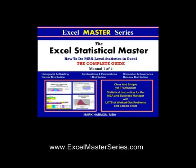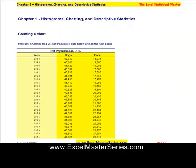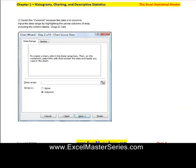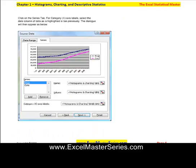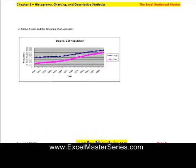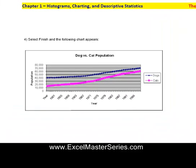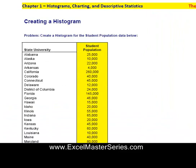Here's the first manual. It covers histograms, combinations, permutations, correlations, covariance, the normal distribution, T-distribution, and the binomial distribution. Here we're going to make a chart out of that data — I walk you through step-by-step with lots of screenshots. There's the chart we will make from that data.